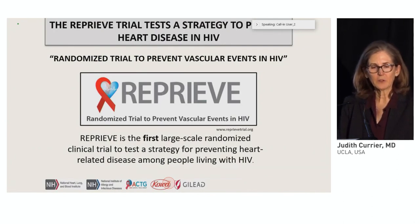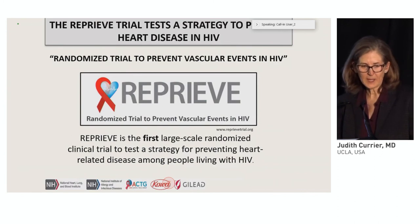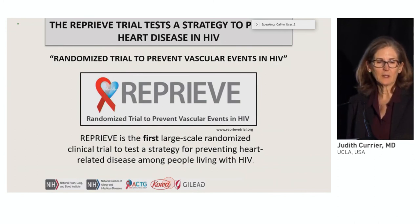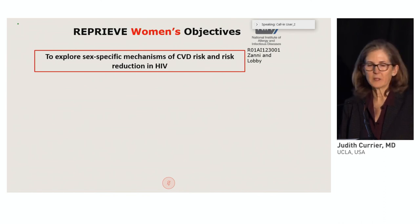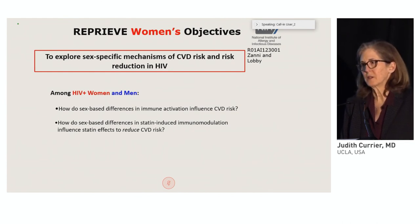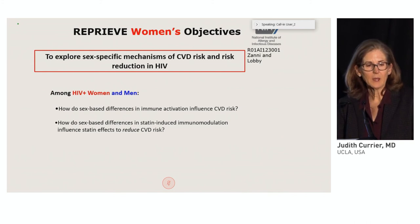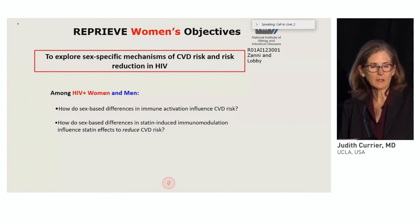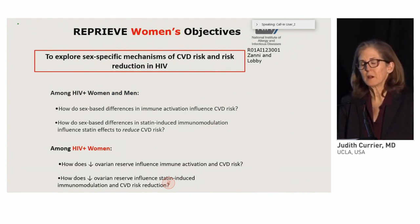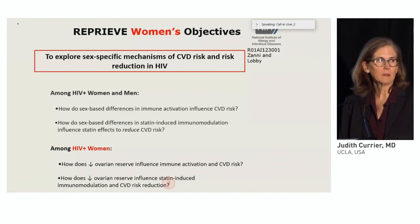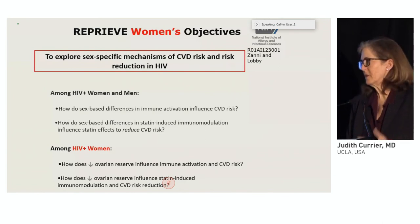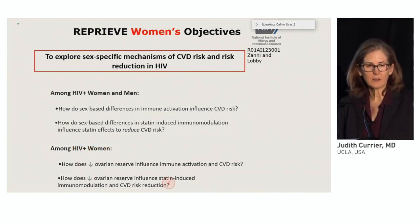In terms of where we're going in the future, the REPRIEVE trial — the first large-scale randomized trial to test statins as an intervention for people living with HIV — has built into it a study to look at sex-specific mechanisms of cardiovascular disease. With 30% women enrolled and 7,500 people around the world, it will look at sex-based differences in statin-induced immunomodulation, how immune activation underlies cardiovascular risk, and whether anti-Müllerian hormone levels influence immune activation and cardiovascular risk.